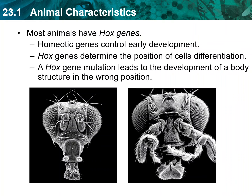A mutation in a homeotic gene can lead to the development of a body structure in the wrong position. For example, the effect of a mutation in the homeotic gene Antennapedia determines whether an insect body segment will grow antennae or legs. As shown on the screen, in a wild-type fly, antennae develop normally. In a fly with a mutation in this gene, legs develop where the antennae should be, but the rest of the fly develops normally. The misplaced legs look normal in structure but are not functional for the fly. Flies with homeotic mutations usually do not live very long.